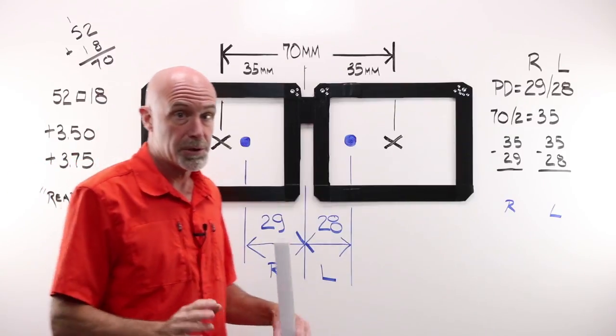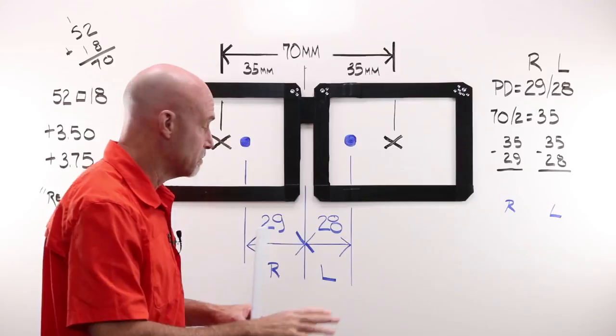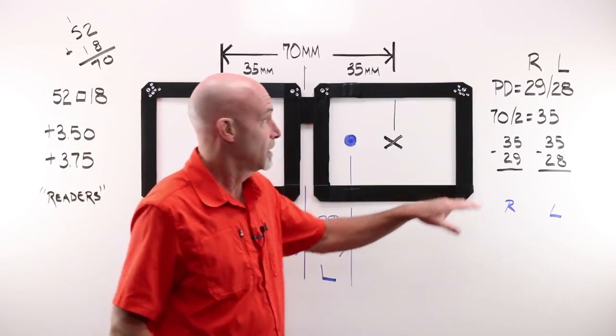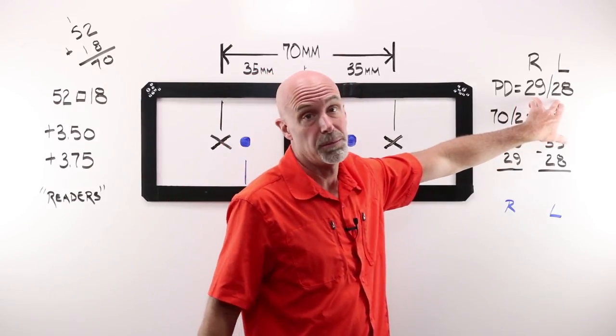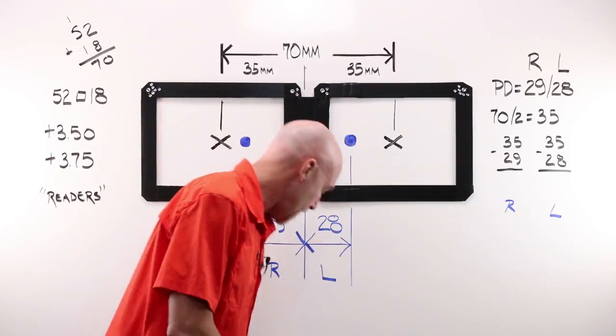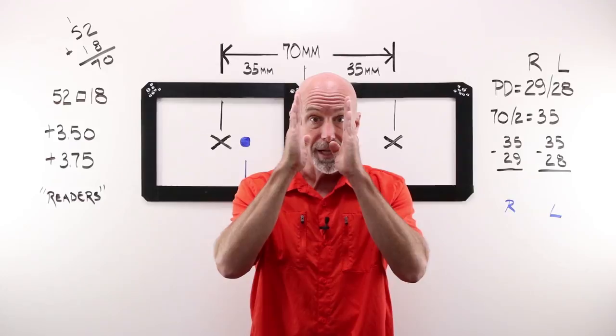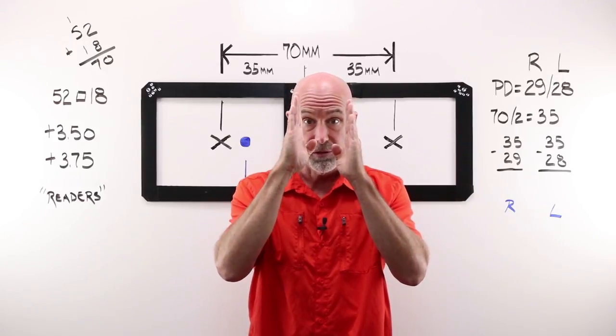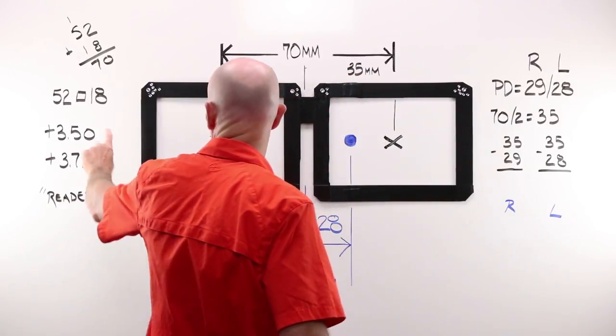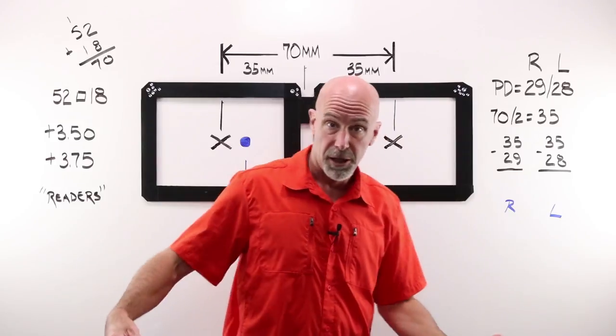The other difference between this and the last two, although we're still doing baby steps and very small changes, is that our PD is given to us monocularly. It isn't a single number, it's two numbers. It's 29 and 28, meaning that this person is not perfectly symmetrical. If you were looking at them, their right eye is a tiny bit further away from the central line of their nose than their left eye is. It's not uncommon at all. Because our power is starting to creep up, we'd want to consider doing that monocular PD.